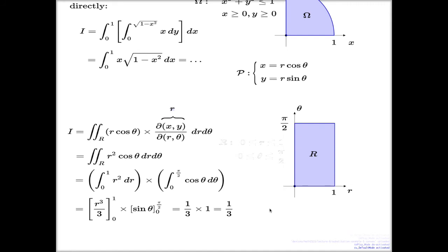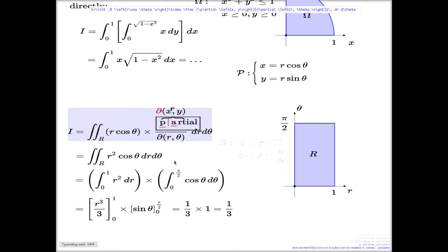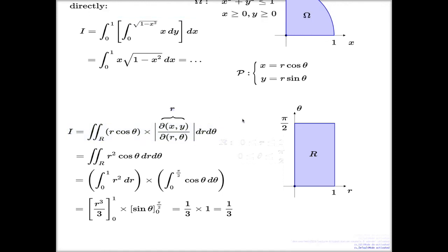Any questions for the polar substitution? Jacobian is something to remember - it's better to remember it rather than computing it every time, and it's very simple: it's r. I realized, yes, actually I was about to fix this but something took my mind off it. I'm supposed to put the vertical lines around this to indicate this is the determinant rather than the matrix itself.